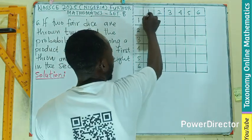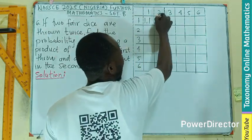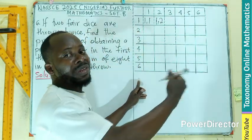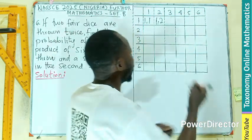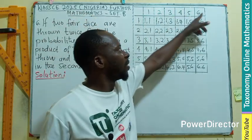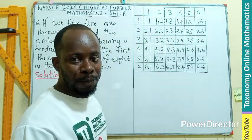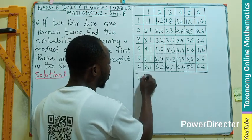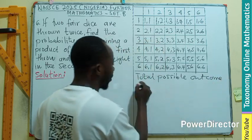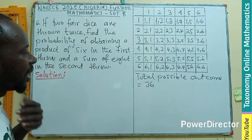There could be a chance of one on the first die and one on the second die, then one on the first die and two on the second die, and so on. Since it is six by six — six times six — that gives us 36. So the total possible outcomes in the sample space is 36.